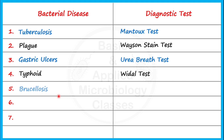Let's see the next disease: brucellosis. Brucellosis is caused by Brucella species and it is a kind of zoonotic disease which can transmit from animals to humans. For detection of brucellosis we perform the Coombs test.